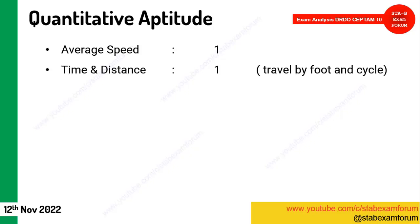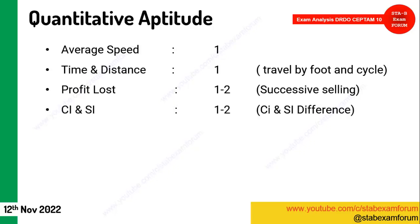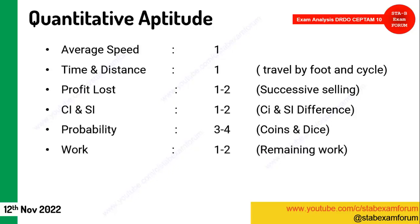A question on average speed came under time and distance — related to travelling partly on foot and partly by cycle. Profit and loss: one to two questions on successive selling. Compound interest and simple interest: one to two questions on the difference between CI and SI. Probability questions on coins and dice appeared — unexpected but included this time. Work questions: one to two questions asked. Trigonometry had simple value-based questions — review all trigonometry formulas.